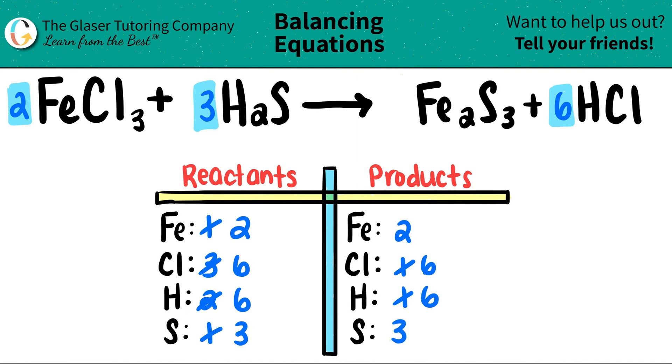So we have our balanced equation. We have two FeCl3s plus three H2Ss, which will yield one Fe2S3 plus six HCls.